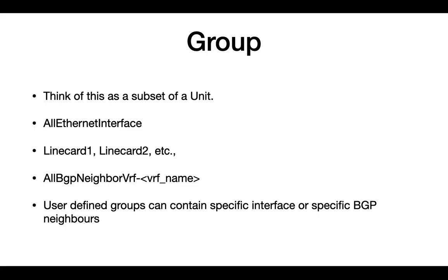The next terminology is groups. Think of a group as a kind of subset of a unit. Some built-in groups include all Ethernet interfaces, or line card one, line card two, line card three, or all BGP neighbors in a specific VRF belonging to a specific group. You could also define user-defined groups that contain specific interfaces or specific BGP neighbors.